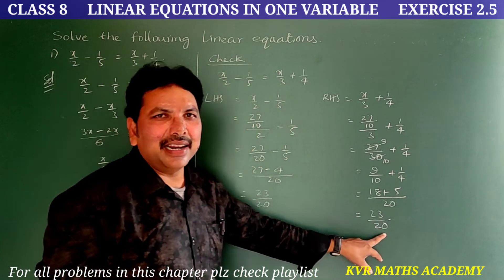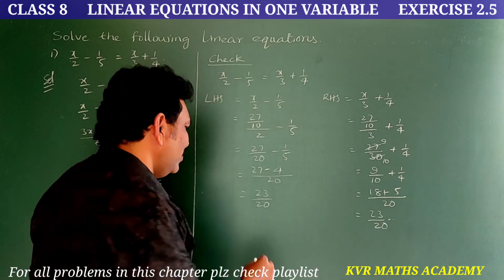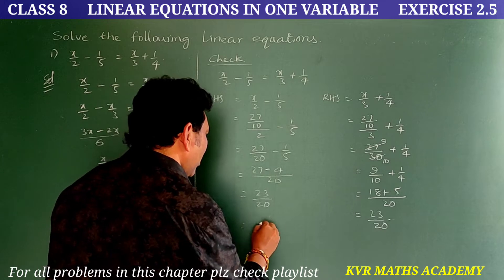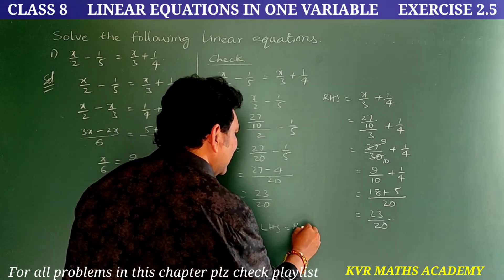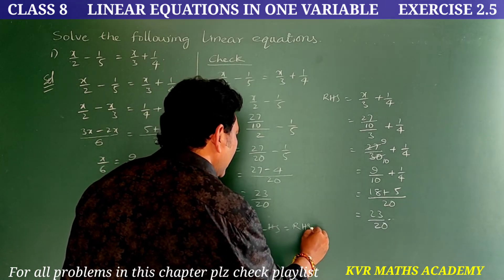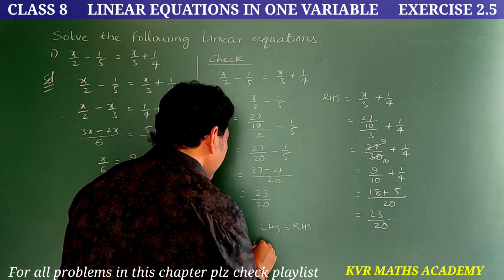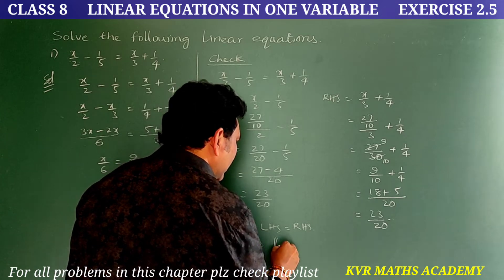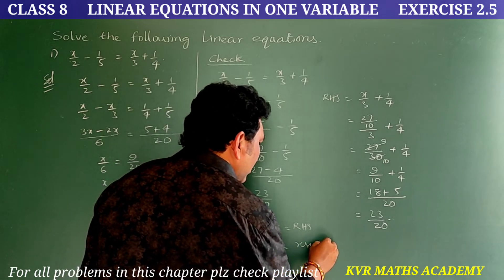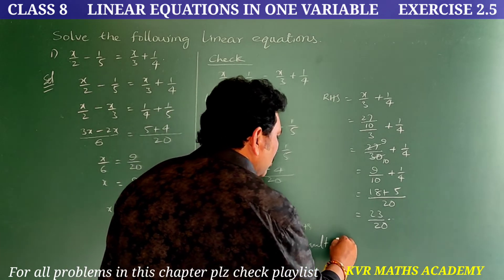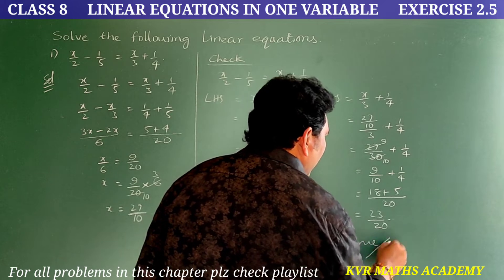LHS = 23/20 and RHS = 23/20 — both are equal. Therefore LHS = RHS, hence the result is true.